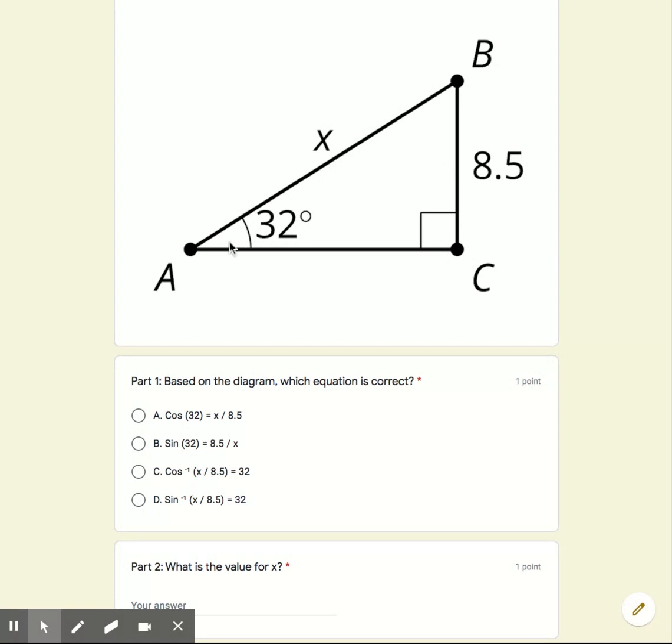So we should have sine of 32 equals 8.5 over X. And so B will be our answer here.